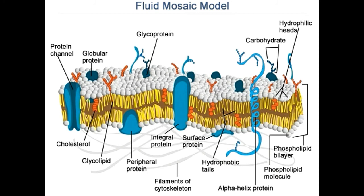In the case of transmembrane proteins, one end is connected with the cell interior, whereas the other touches the exterior. When these proteins cross the bilayer, they might have an alpha helical configuration. These proteins could be single-pass or multi-pass proteins, meaning they can cross the lipid bilayer single or multiple times.